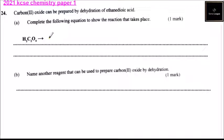Question number 24. Carbon monoxide can be prepared by dehydration of ethanedioic acid. Part A: Complete the following equation to show the reaction that takes place. So we have ethanedioic acid.